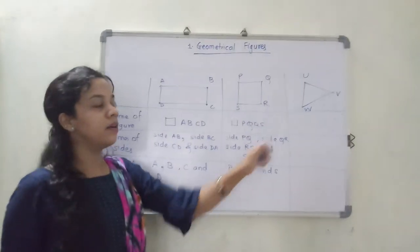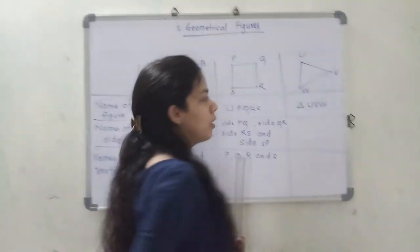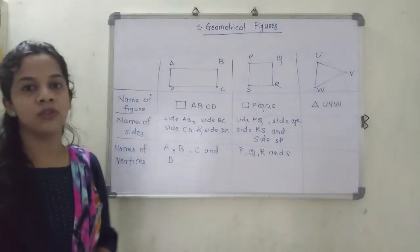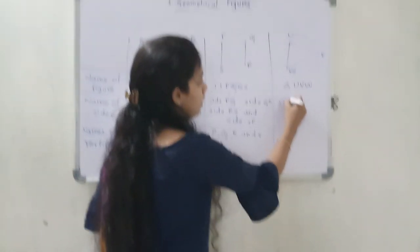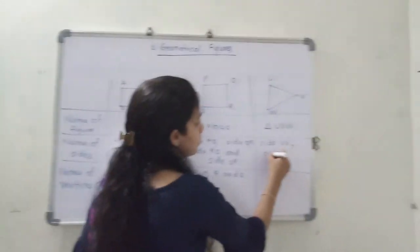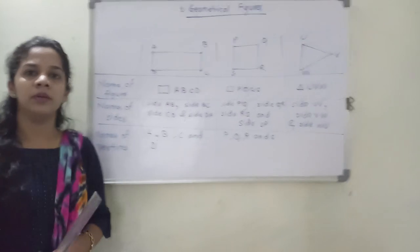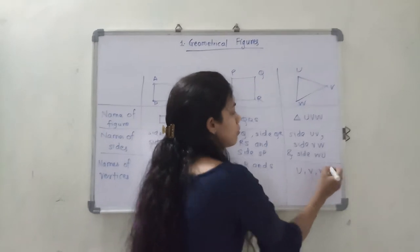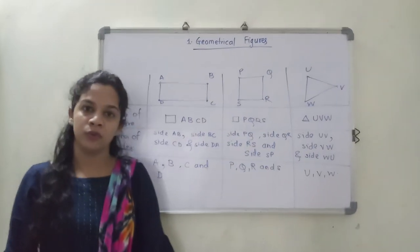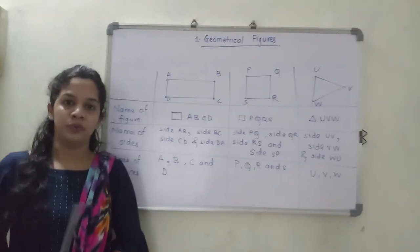Now in the same way, you can see a triangle. The name of the triangle is triangle UVW. Which are the names of the sides? Side UV, side VW and side WU. Can you tell me which are the vertices? Yes, there are three vertices: U, V and W. I hope you have understood it. Go through these videos, revise, and try to solve this table in your book. Thank you.